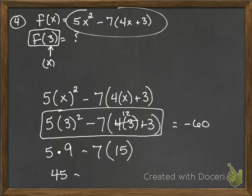So we have 5 times 9 is 45. 45 minus 7 times 15. I'm just going to do this over here. 10 plus 5, so 70 plus 35. So, 105.